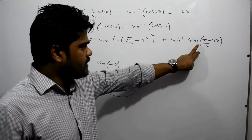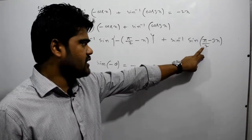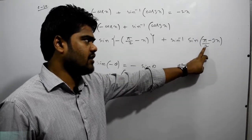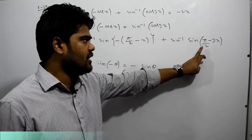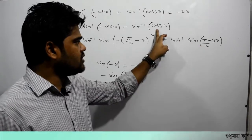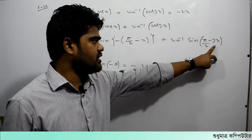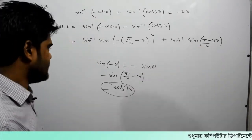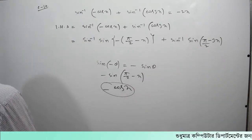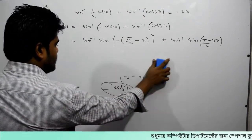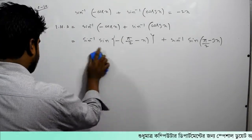Similarly, sin(90 minus 3x): since 90 equals 1, sin equals cos. So we write cos 3x for this term as well.